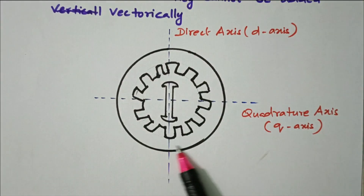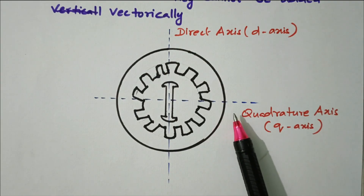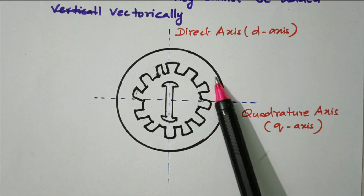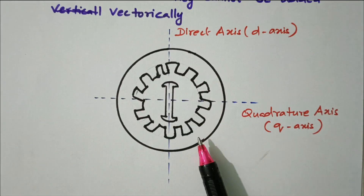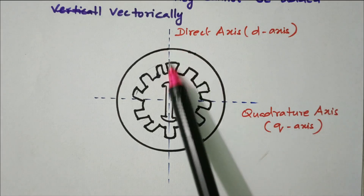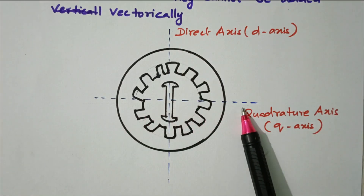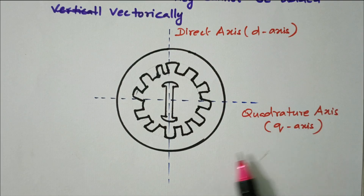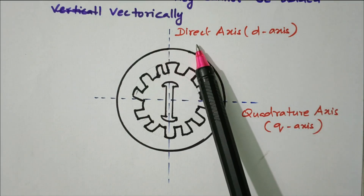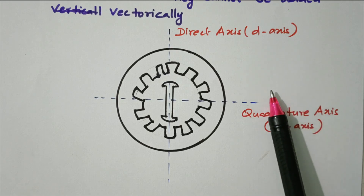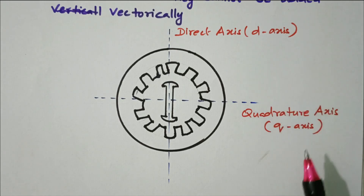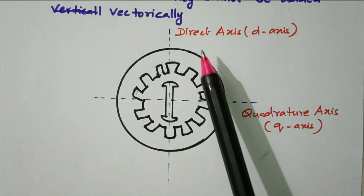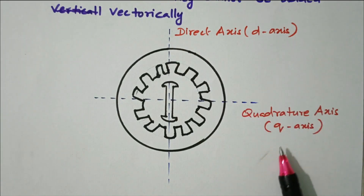This is the diagram of the alternator. The outer part is the stator and the inner is the armature. The machine has two axes: the horizontal axis is called the quadrature axis or Q-axis, and the vertical one is called the direct axis or D-axis. We are going to deal with these two — the D-axis and Q-axis, that is the direct axis and quadrature axis.